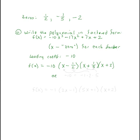To clean up the factorization, notice that negative 10 equals negative 1 times 2 times 5. We can distribute the 2 into the first factor to get (2x minus 1), and distribute the 5 into the second factor to get (5x plus 1). That leaves the negative 1 out front, and the third factor remains (x plus 2). Our final factored form is: f(x) = negative 1 times (2x minus 1)(5x plus 1)(x plus 2) — all whole number coefficients.